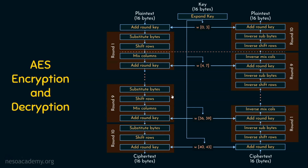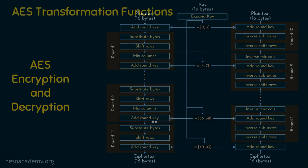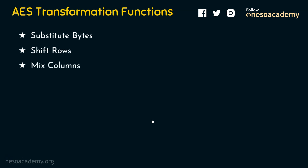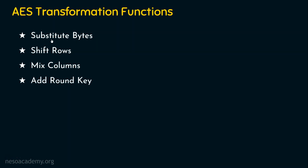The topic of the day is understanding what happens in every round — the role of the various transformations. We have four transformation functions: number one, substitute bytes or sub bytes; number two, shift rows; number three, mix columns; and number four, add round key. These four are present in every round except the last round, which excludes mix columns.